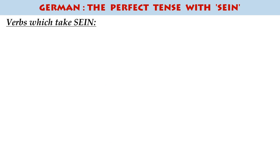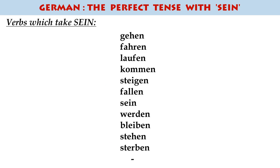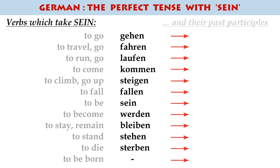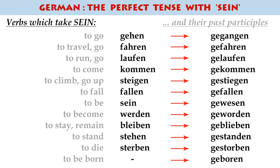And here they are all on the screen — or at least some of the main ones. I'm sure there are plenty of others that you will come across, especially if you take German on beyond GCSE. But here are your main verbs which you will find happen to use sein as the second part of that construction in the perfect tense. What you will probably notice is that all of these verbs, or most of them, have something to do with movement.